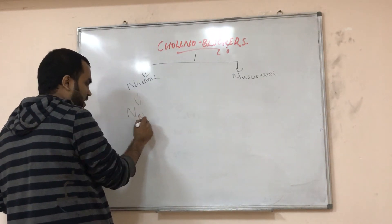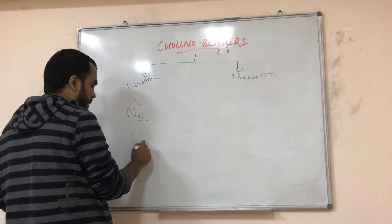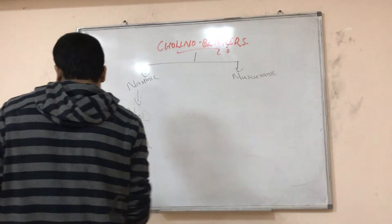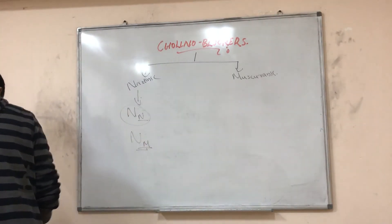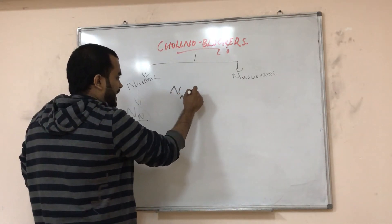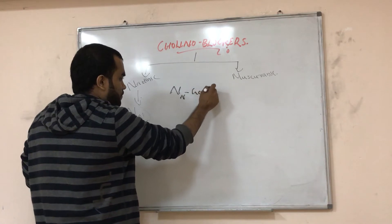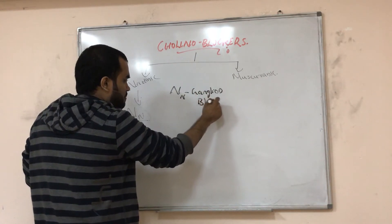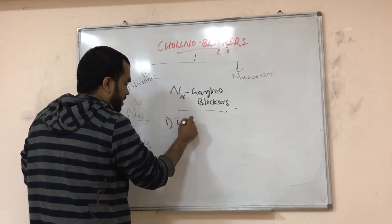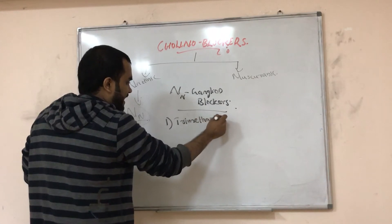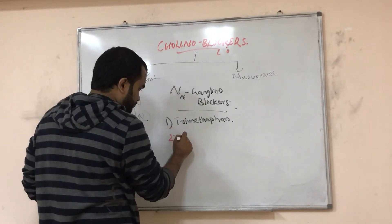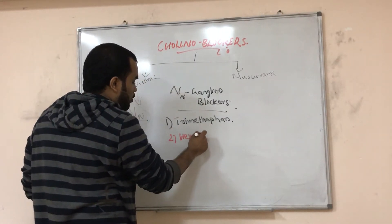Nicotinic neural refers to ganglia and neuromuscular junction. The NN blockers are also called ganglion blockers. Remember two very important examples: trimethaphan and hexamethonium — they are ganglionic blockers.